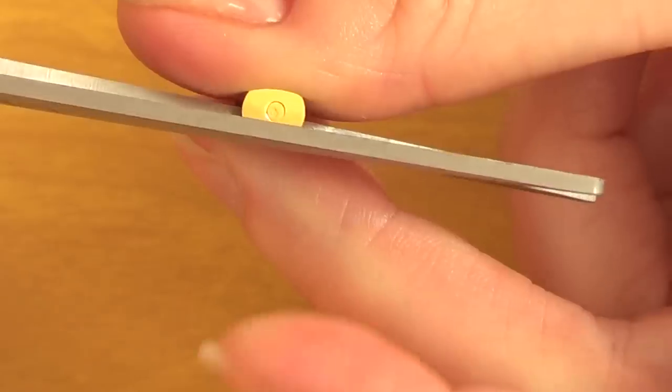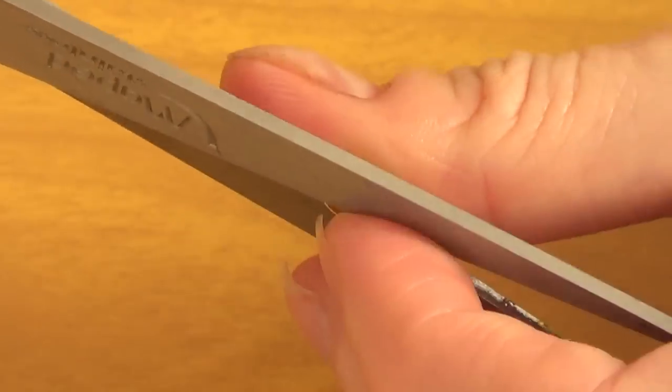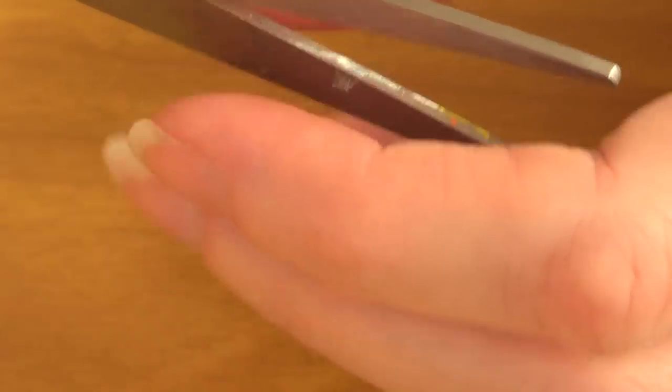Put your scissors like so and then just cut in that part with the excess. Push it just as much as you can. It's like cutting paper but a bit harder. And then the other side as well.